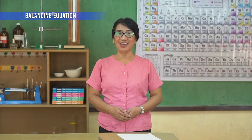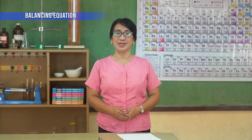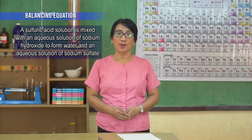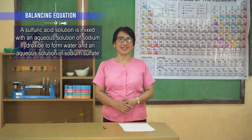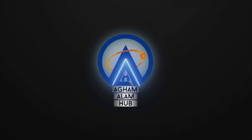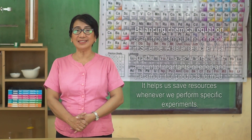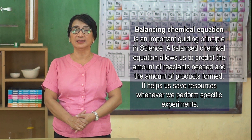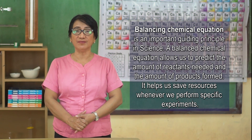Now, balance this chemical equation on your own. Be patient in balancing the equation. Remember, practice makes perfect. A sulfuric acid solution is mixed with an aqueous solution of sodium hydroxide to form water and an aqueous solution of sodium sulfate. Step one is done for you. Good luck, SciPals! Balancing a chemical equation is an important guiding principle in science. A balanced chemical equation allows us to predict the amount of reactants needed and the amount of products formed. It helps us save resources whenever we perform specific experiments.